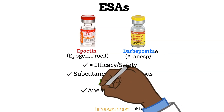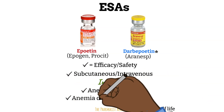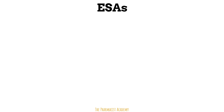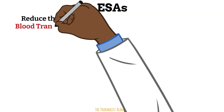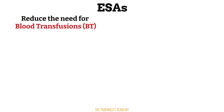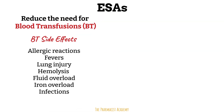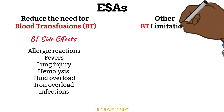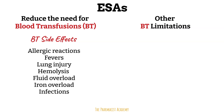The ESAs are FDA indicated for anemia due to CKD and anemia due to chemotherapy use. Aside from these FDA-approved indications, ESAs are utilized off-label to reduce the need for blood transfusions. ESAs and blood transfusions both increase the red blood cell count, but ESAs are sometimes used as an alternative so we don't give the patient too many blood transfusions. Unfortunately, blood transfusions come with many side effects, and they have other limitations such as requiring long-distance travel or being restricted by religious beliefs, as seen with Jehovah's Witnesses.